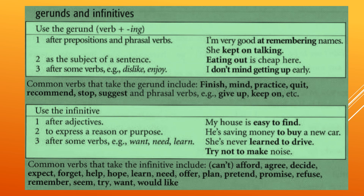Number two: as the subject of a sentence. For example, 'Eating out is cheap here.' 'Dancing is a good exercise.' So these are the verbs which are used as a subject.